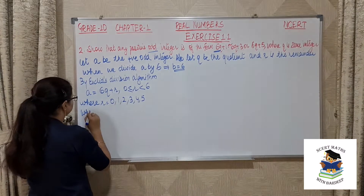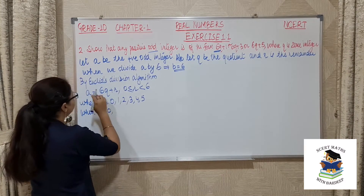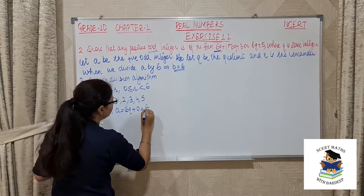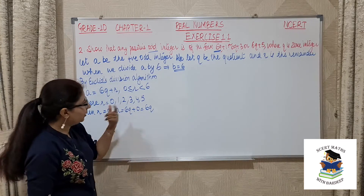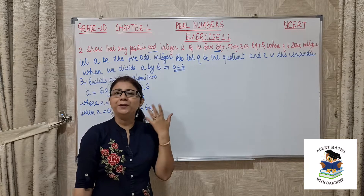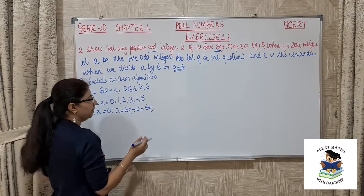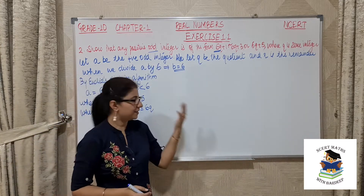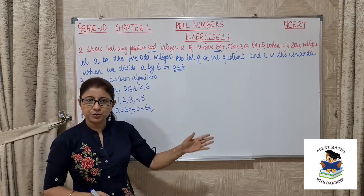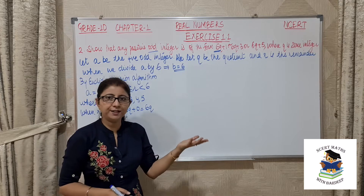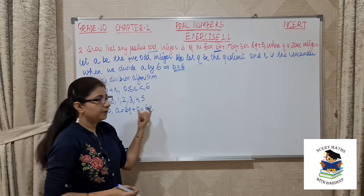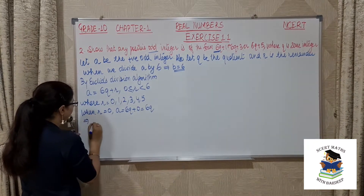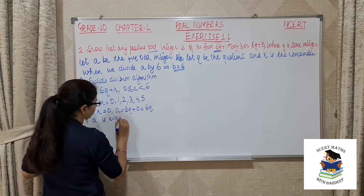We will put each value of R and find the corresponding value of A, then check whether the number is odd or even. When R equals 0, A equals 6Q plus 0, which is 6Q. Any number multiplied by 6 will be even — for example, 6×0=0, 6×1=6, 6×2=12. So irrespective of the value of Q, 6Q will always be an even number. This implies A is even.